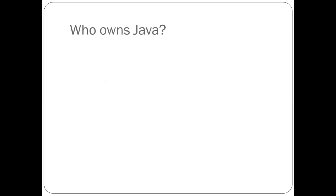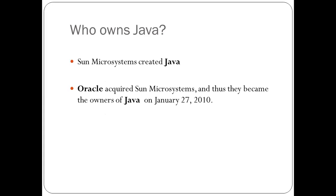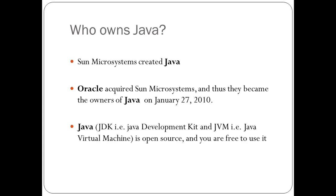Now, who owns Java? We know that Java was developed by Sun Microsystems, but Oracle acquired Sun Microsystems and thus became the owners of Java on January 27, 2010. The JDK — Java Development Kit — and JVM — Java Virtual Machine — are open source and free to use.